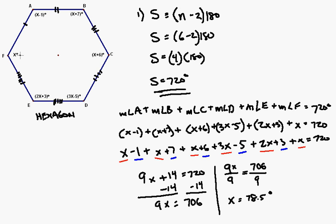Okay, so if x is 78.5—it's not degrees, that's the value of x, 78.5. So, now let's plug in for each of the expressions here and find out the degree measure of each of the angles.